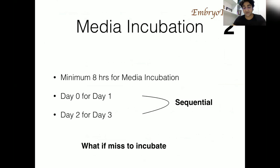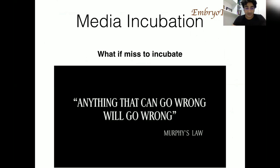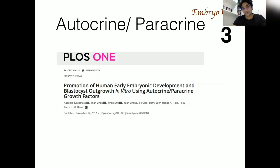The second argument: with sequential media, you incubate media three times, increasing the chance of missing a media incubation step. Always remember Murphy's law — if anything can go wrong, it will go wrong — so it is better to minimize steps in the IVF lab to achieve error-free outcomes. The third important point concerns autocrine and paracrine factors secreted by the embryos themselves to promote their own growth. In sequential media, we wash away those factors, losing that benefit to the embryo.